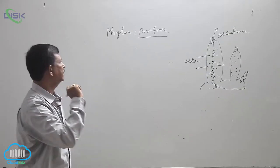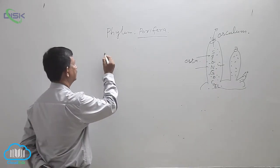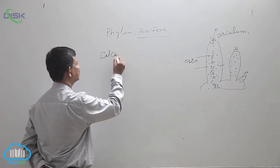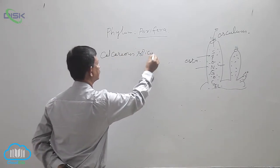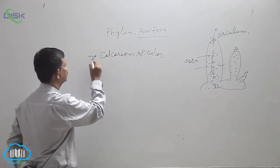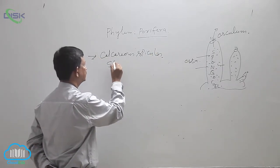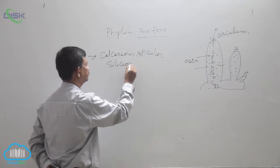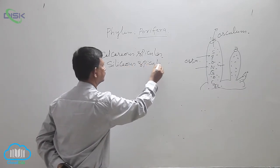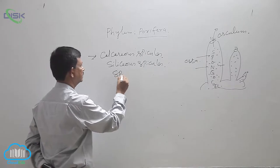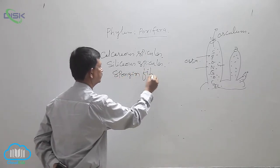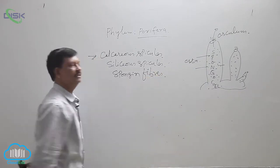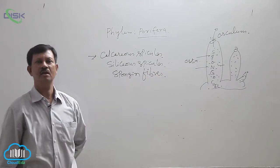As you see the body, spicules are present there many times. They are calcareous spicules, siliceous spicules, and spongin fibers. These provide the mechanical support to the organism.